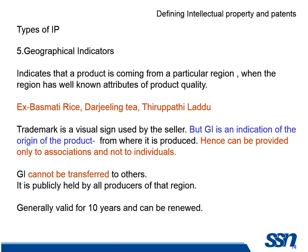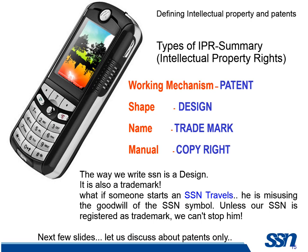For example, if I take a mobile phone: how it works is covered by a patent; the shape is covered by the design; the name and the way it is written is a trademark; and the manual which comes to you is a copyright. Therefore, any product covers all kinds of IPR. We cannot stop with one alone. For example, the way we write SSN is a design and also a trademark. If somebody starts 'SSN Travels', everybody will associate the goodwill of SSN to that. Unless we have registered SSN as a trademark, we cannot prevent them from using it.